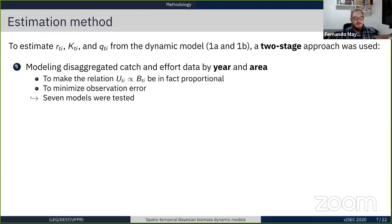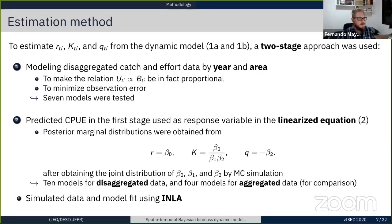In the first approach, we modeled disaggregated data. That means we modeled catch and effort data by year and area, and this aims to make the relation of CPUE and biomass, in fact, proportional and to minimize observation errors. In this stage, we used seven models, we tested seven different models. In the second stage, we used the predicted catch, hence the CPUE from the first stage, as a response variable in the linearized equation shown above. Then, posterior marginal distributions were obtained from the transformation of the parameters after obtaining the joint distribution of the betas.